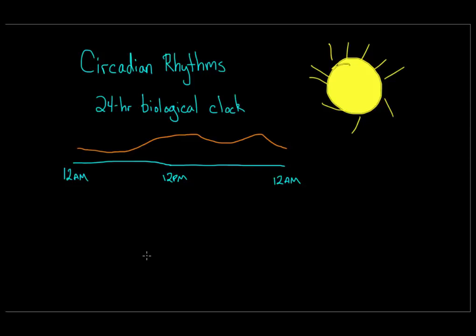Circadian rhythms also change as you age, which is why many younger people tend to be night owls, while older people tend to wake up and go to bed early. Your circadian rhythms can also prevent you from sleeping in when you want to. If you get up at 6am Monday through Friday, your internal biological clock adjusts to that schedule, so you'll still wake up around 6am on Saturday. It regulates your metabolism, body temperature, and sleep cycles to wake you up at the same time.